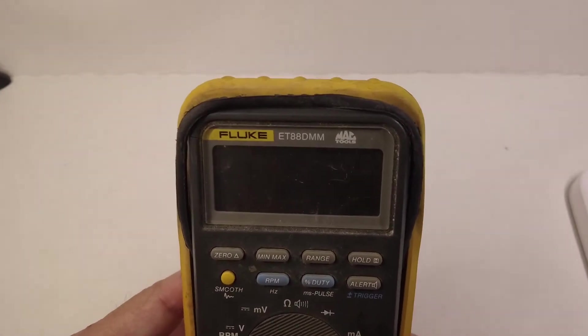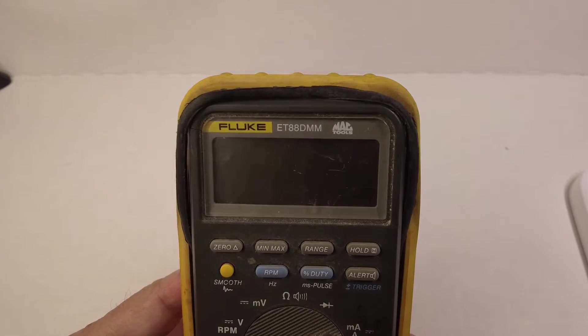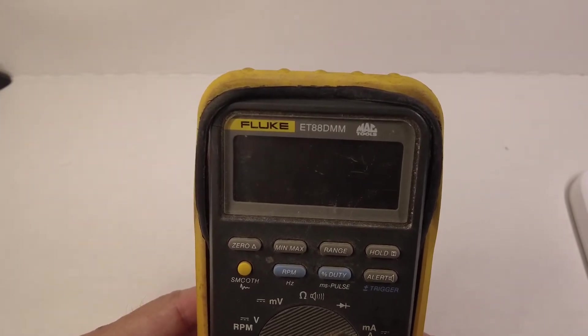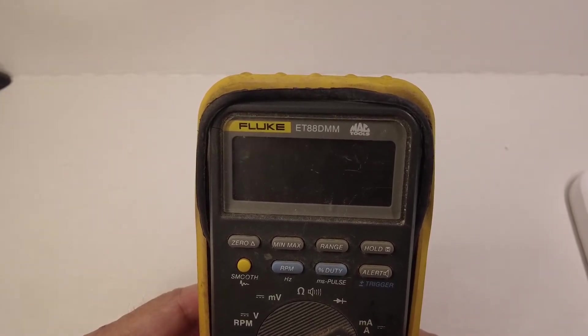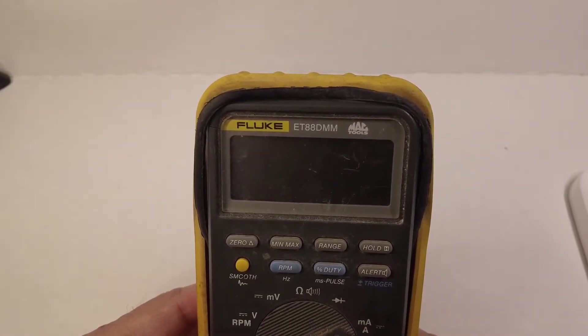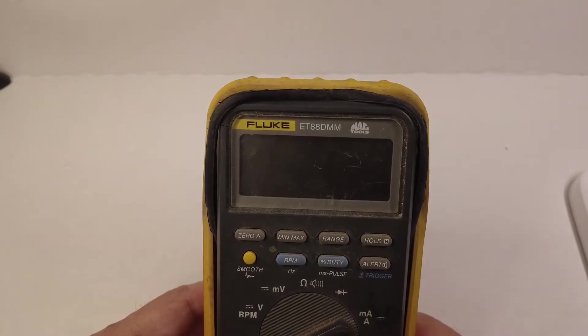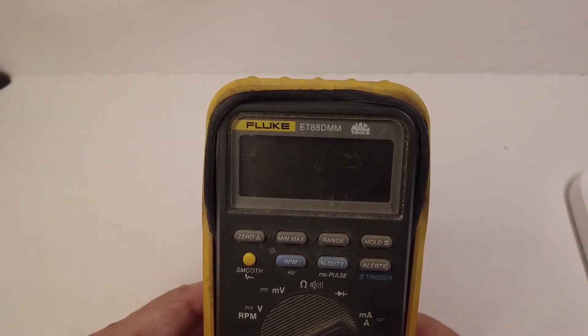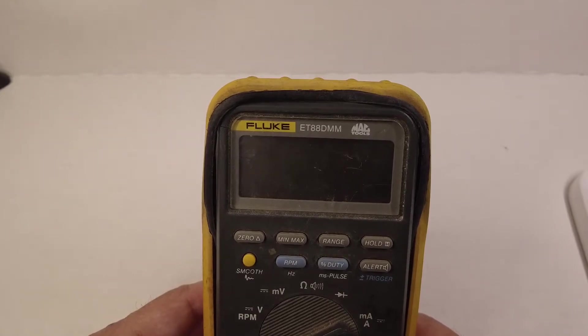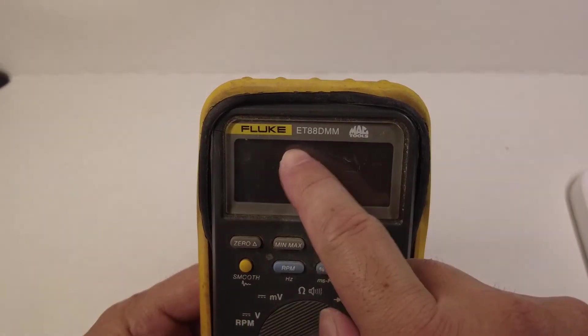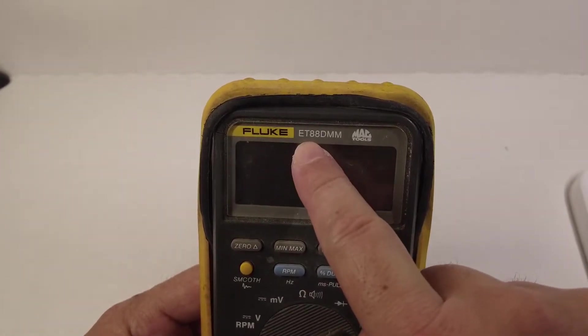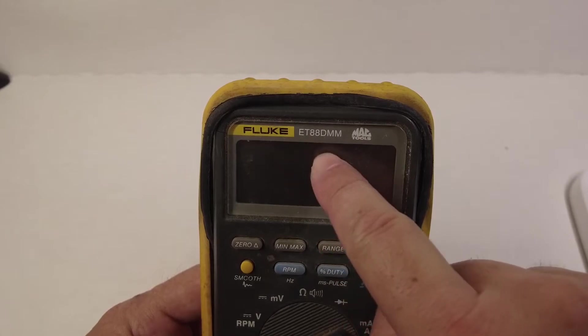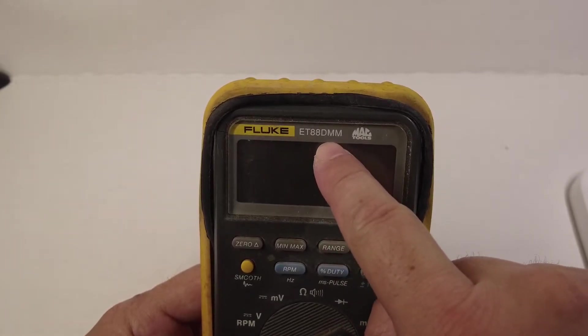So this was a special arrangement because Mac Tools, they've got their distribution outlet. They've got distribution trucks that drive around and go to all the auto shops. These auto shops have their arrangements with the Mac Tools trucks. And it's the same thing. This is a Fluke 88. But for Mac Tools, they branded it. This is the Fluke brand, but the model number is the Mac Tools ET 88 DMM.